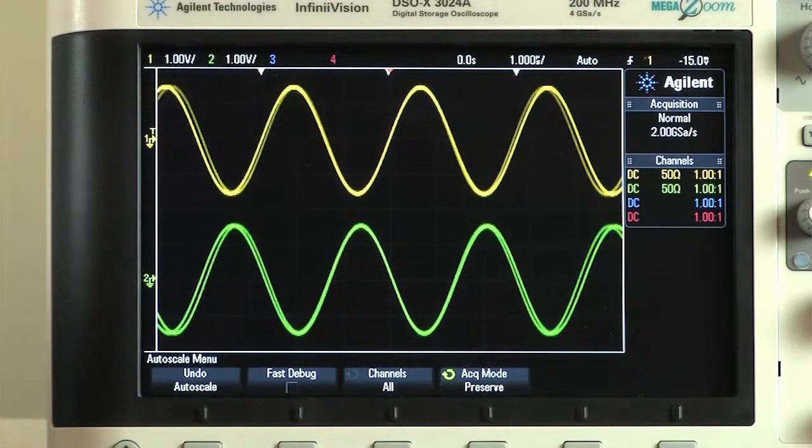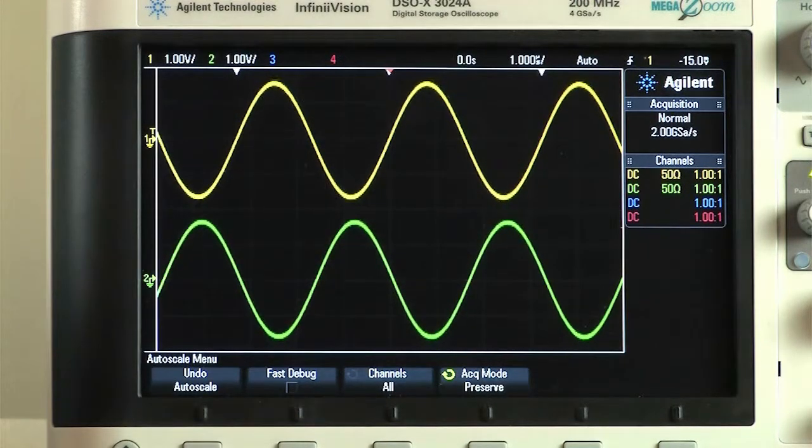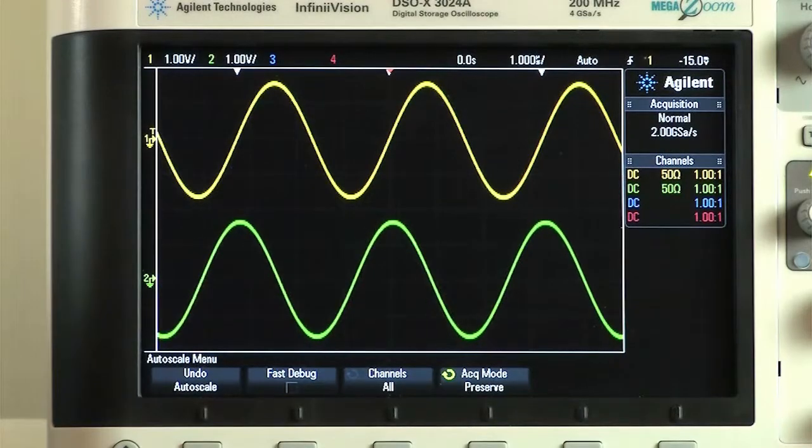With the two-channel generators, you can easily create differential outputs, which can be coupled in frequency, amplitude, or both. The outputs can be offset in phase as well.